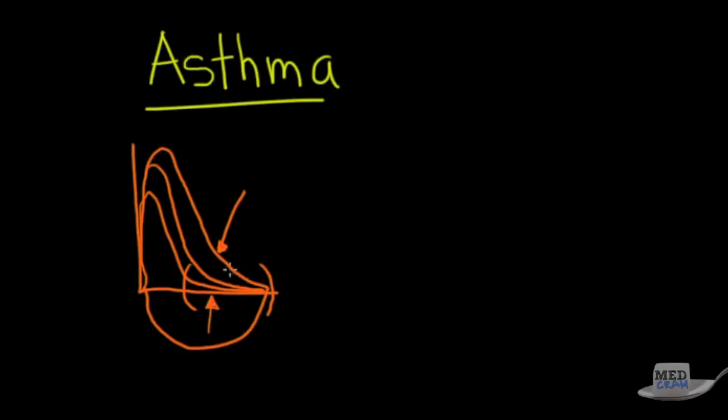As that obstruction gets worse, you see a decrement in the flow rates, especially later on in blowing out. The point here I want to make is that these are the small airways. This is where asthma is occurring. It's obstruction of these small airways, not the large ones, but the small ones.